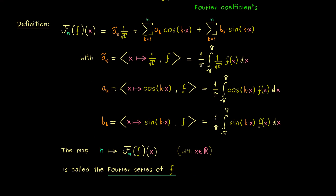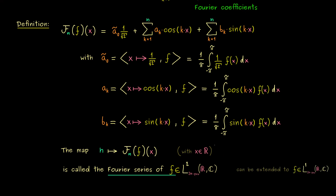Everything we have written makes sense if f comes from L2, because then we have the orthogonal projection. However, one can extend this result to a function in L1 as well, simply by ignoring the inner product and just using the integral formulas — since cosine and sine are bounded, there is no problem with the existence of the integrals. The question of what the interpretation is in the L1 case without orthogonal projection is not so easy to answer and is left for another video.